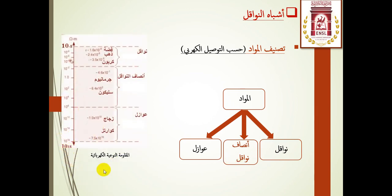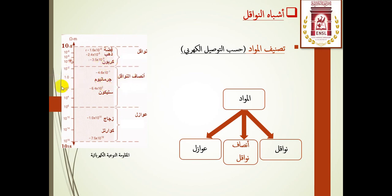بالنسبة للمقاومة النوعية الكهربائية -وهي عكس الناقلية- ففي العوازل تكون كبيرة جدا، حوالي 10^8 إلى 10^18 أوم في المتر، بينما في النواقل تكون ضعيفة جدا، حوالي 10^-6 إلى 10^-8. وبالمناسبة، الفضة هي المادة الأكثر ناقلية للتيار الكهربائي، عكس ما هو مشاع أنه الذهب الذي يأتي في المرتبة الثانية. بين النواقل والعوازل توجد أنصاف النواقل من حيث المقاومة النوعية المتوسطة، وأبرزها السيليسيوم والجيرمانيوم.